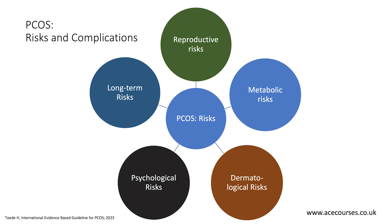PCOS risks can be grouped into five domains: reproductive risks, metabolic risks, dermatological consequences, psychological consequences, and finally long-term risks.